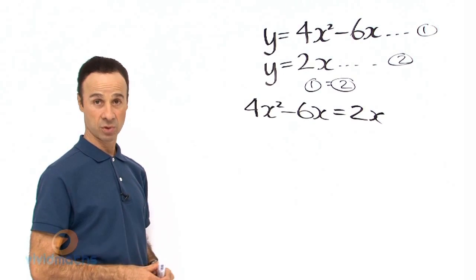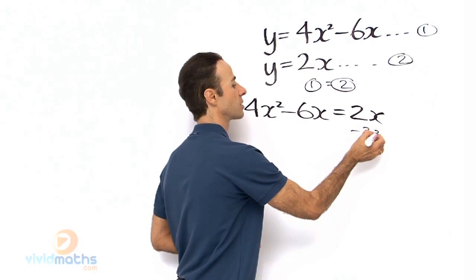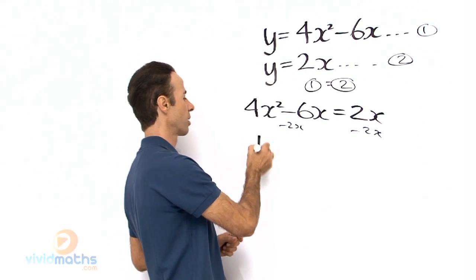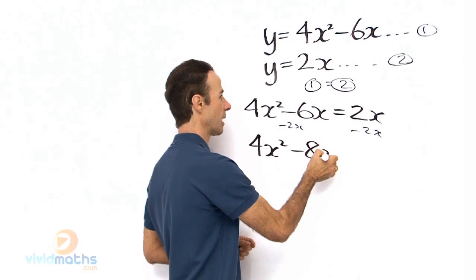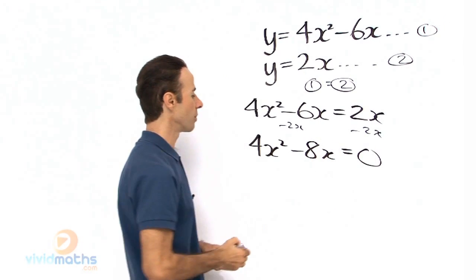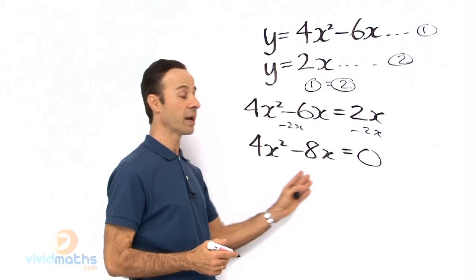Now let us bring everything over to one side, so that means we will go subtract 2x, subtract 2x from both sides. We are left with 4x squared minus 8x equals 0. Okay here is an opportunity for us to factorize, so we could take what out?